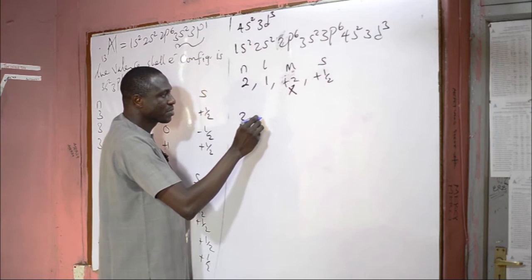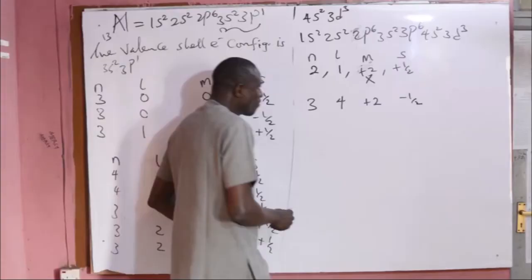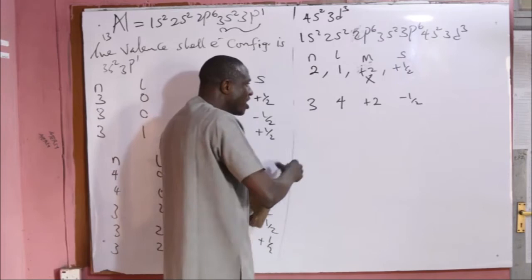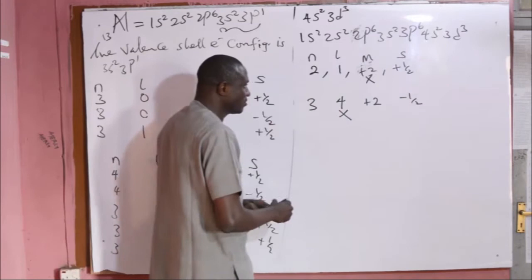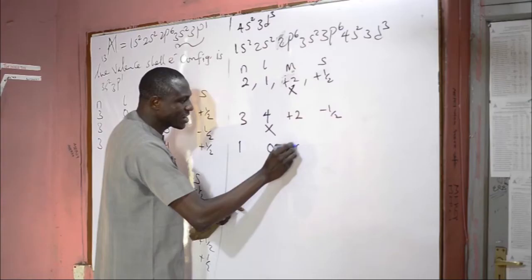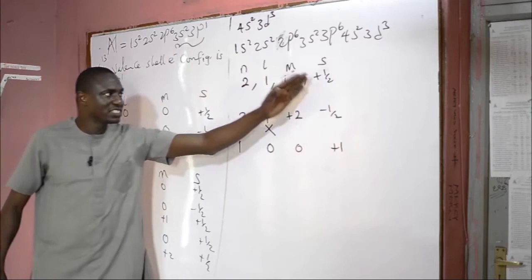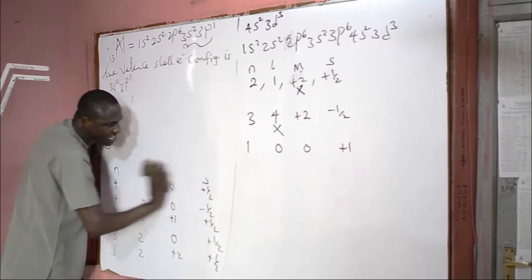Another example is the set (3, 4, +2, −½). When n = 3, l can only be 0, 1, or 2. A value of l = 4 is not allowed for n = 3, making this set not possible. Another case is (1, 0, 0, +1): since spin can only take the values +½ or −½, a spin value of +1 is not allowed. These are the likely questions that may be asked based on quantum numbers.